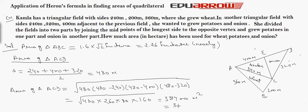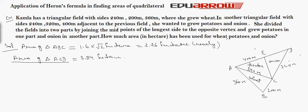In terms of hectare it is equal to 3.84 hectare. Therefore, the area of triangle ACD is equal to 3.84 hectare.